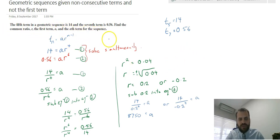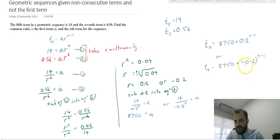We can say that tn equals 8750 times 0.2 to the power of n minus 1, or tn equals 8750 times negative 0.2 to the power of n minus 1.